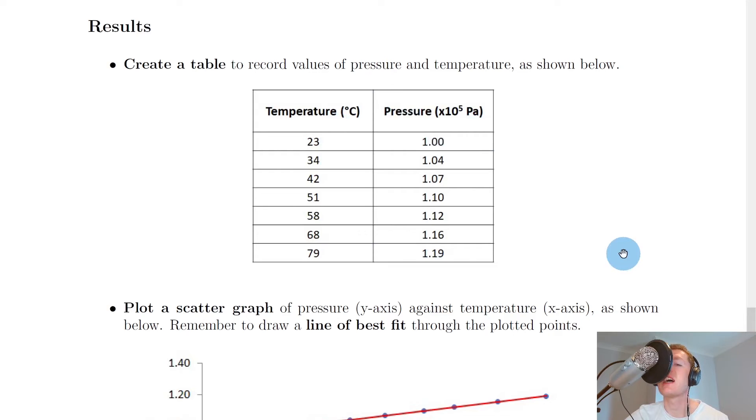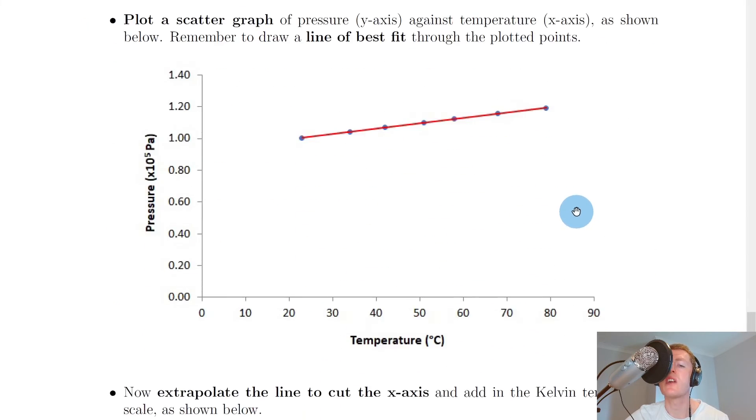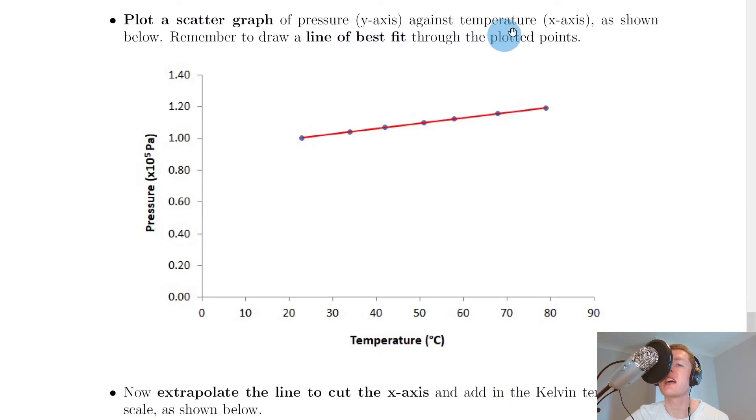So plotting a scatter graph of pressure on the y-axis against temperature on the x-axis as shown below gives us this shape here. So we have pressure in times 10 to the 5 pascals on the y-axis and temperature in degrees Celsius on the x-axis. However you'll notice that this gives us a linear relationship but it's not exactly directly proportional because if we extended this line it's not actually going through the origin. However there's an important trick here we can do in order to obtain a graph that does have a straight line going through the origin because that's going to be more useful for us.